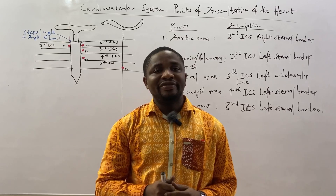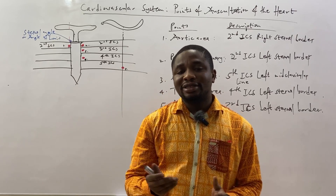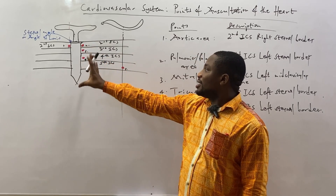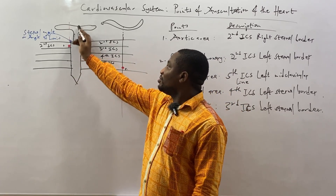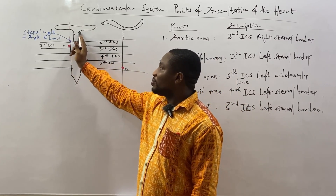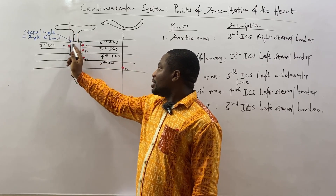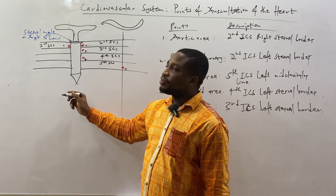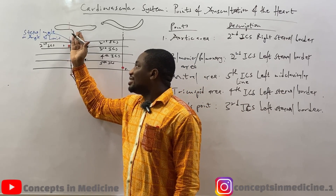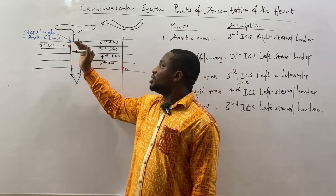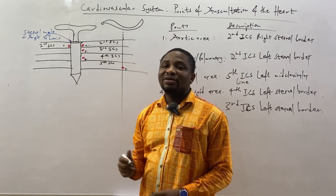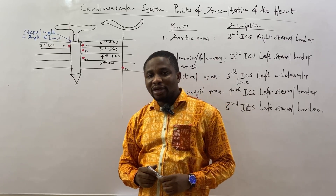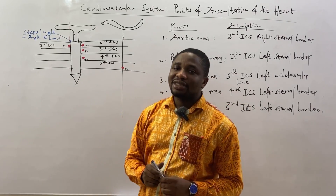Out of these five, four are very, very important, with an additional one making it five. As diagrammatized in this figure, we have the sternum. The sternum is made up of the manubrium, the body of the sternum, and the xiphoid sternum. At the junction between the manubrium and the body of the sternum lies what you call the sternal angle, or the angle of Louis.